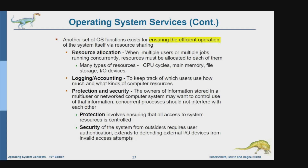The next part covers another set of OS functions to ensure the efficiency of operation of the computing system. We have resource allocation. In an OS we may have multiple users or multiple programs running concurrently and simultaneously, so the OS must have resource allocation management to provide resources for each user or each program running inside the operating system. Resource allocation may include memory storage, input/output devices, as well as CPU cycles.